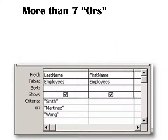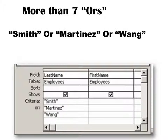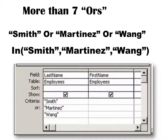What if you need more than seven ORs but only have room for seven rows? You have a couple of options. One is to write them all on the same criteria line: Smith OR Martinez OR Wang OR all the others. Another option is to use the IN function — IN, open parenthesis, then put Smith separated by a comma, and so on. Remember, each of these text criteria values must be in quotation marks.